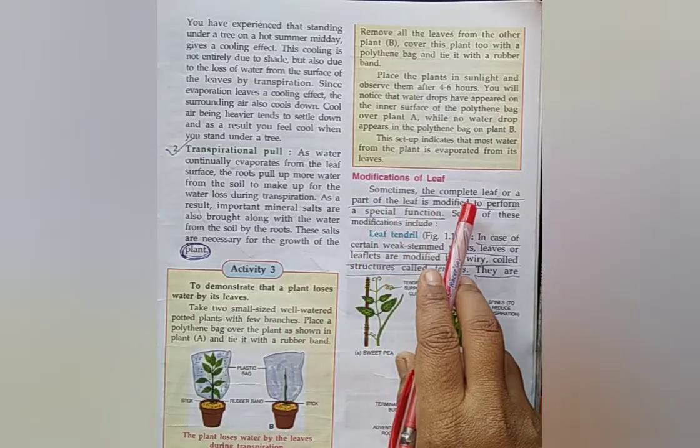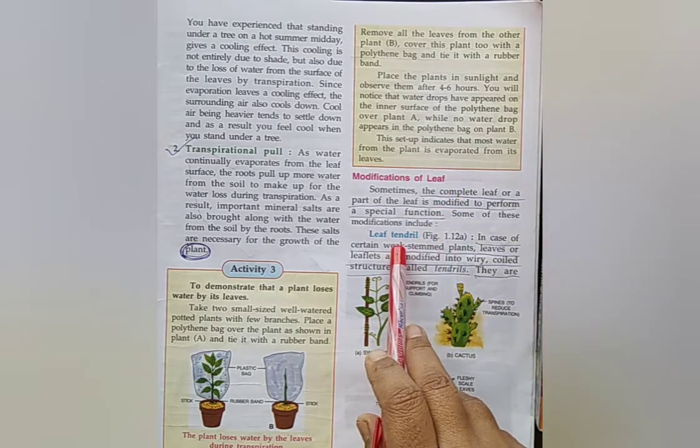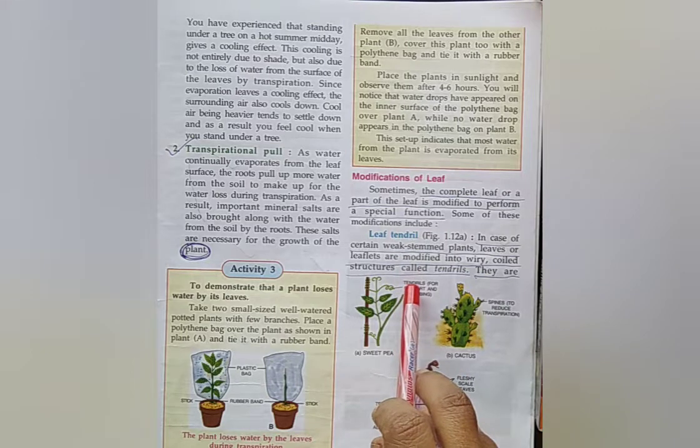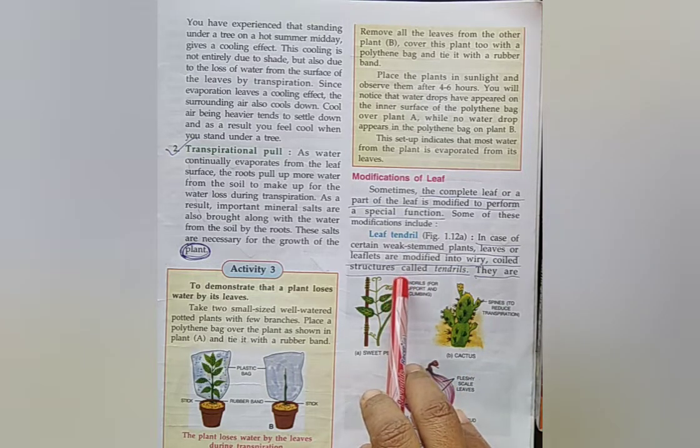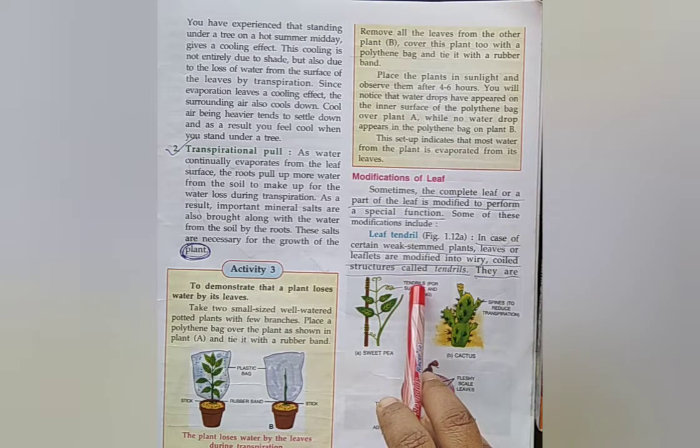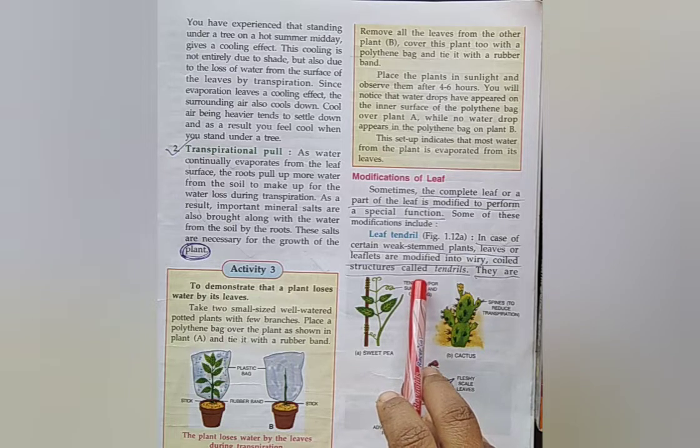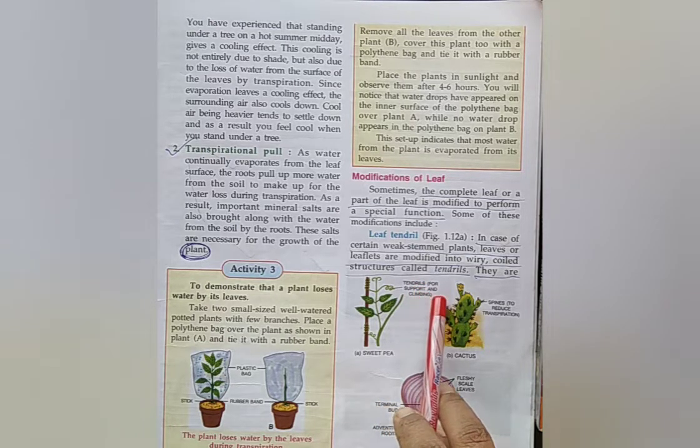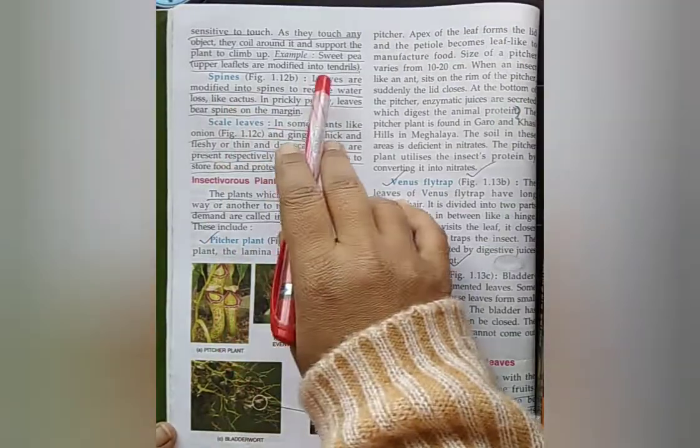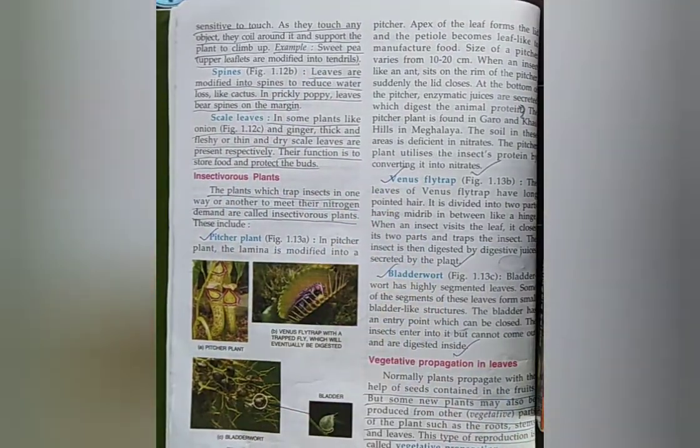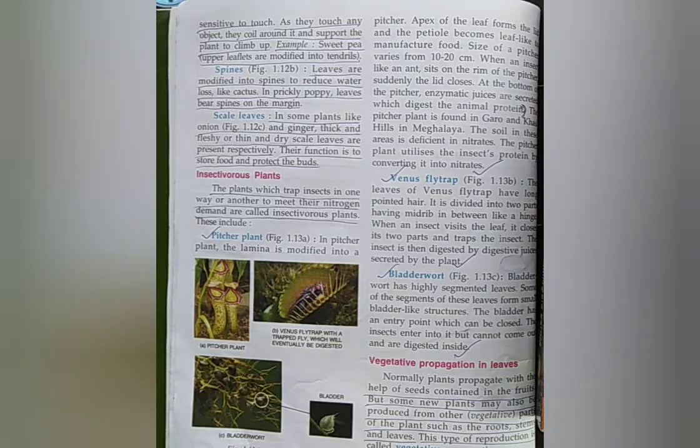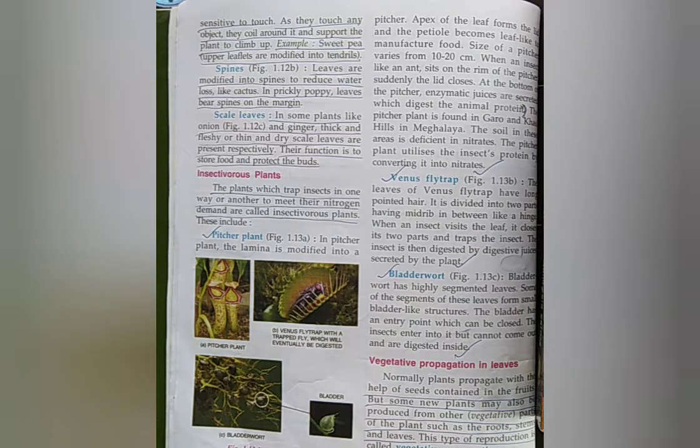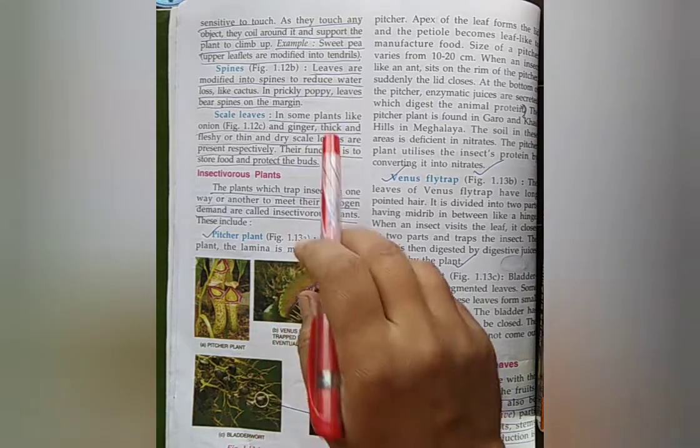Write the name of modifications of leaf: Leaf tendrils, spines, scale leaves. What is leaf tendril? In case of certain weak-stemmed plants, leaves or leaflets are modified into very coiled structures called tendrils. Write the function of leaf tendril: When leaf tendril touch any object, they coil around it and support the plant to climb up. Example: Sweet pea, upper leaflets are modified into tendrils.